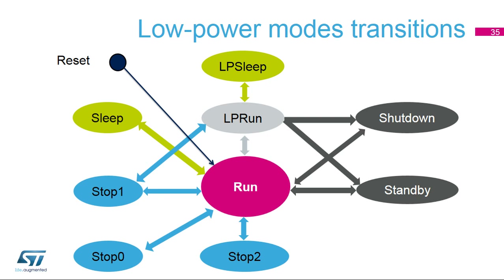Here is a summary of all STM32L4 power modes. From run mode, it is possible to access all low-power modes except low-power sleep mode. To enter low-power sleep mode, the device must first move to low-power run mode and execute a wait-for-interrupt or wait-for-event instruction while the low-power regulator is active. When exiting low-power sleep mode, the STM32L4 is in low-power run mode. When in low-power run mode, it is possible to go into all low-power modes except sleep, stop 0, and stop 2 modes. If the device enters stop 1 mode from low-power run mode, it will exit in low-power run mode. If the device enters standby or shutdown from low-power run mode, it will exit in run mode.